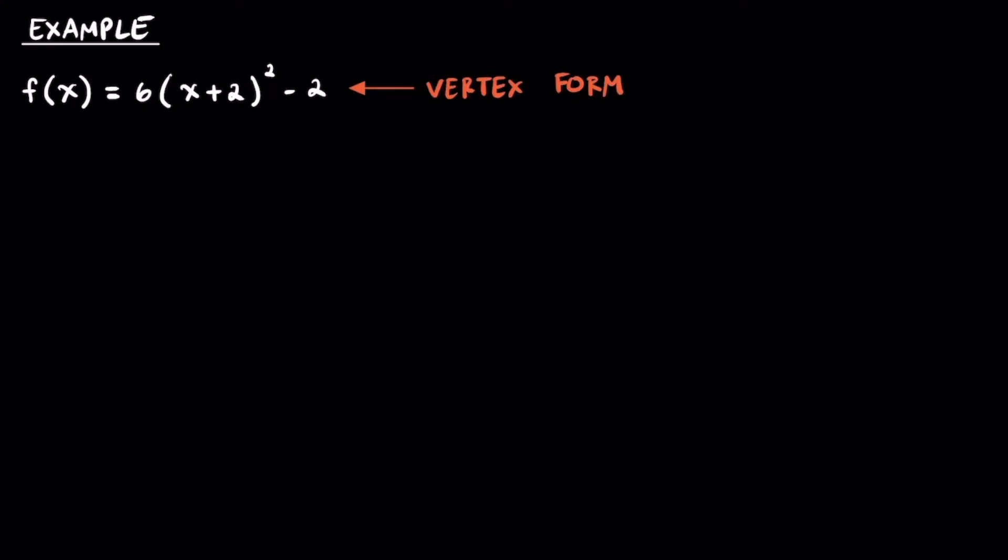The function that we're starting with is in vertex form, and for starters, let's see if we can turn this into standard form. First, we're going to expand this (x + 2)² squared, so we'll have 6 times the quantity of x² + 4x + 4, and then the minus 2 on the outside.